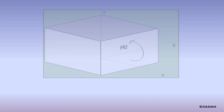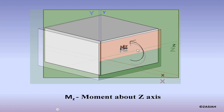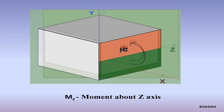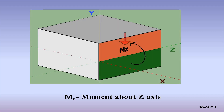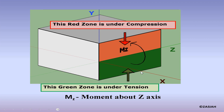Here a moment is applied on the object about the z-axis, that is Mz, and due to this moment Mz, the top red zone is under compression and the bottom green zone is under tension.